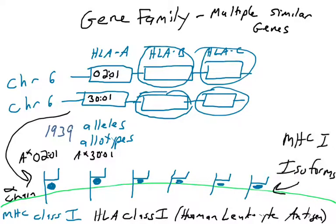Now let's talk about how you can make many different MHC1 proteins on the surface of your cells. We use the term isoforms to refer to all the different versions present on your cells. Each version is an allotype, and allotypes and isoforms are interchangeable terms here. If you look at one of your cells covered in MHC1s, there are different isoforms of MHC1 present. Again, the more different forms you have, the better. We can code for up to six different MHC1 isoforms.